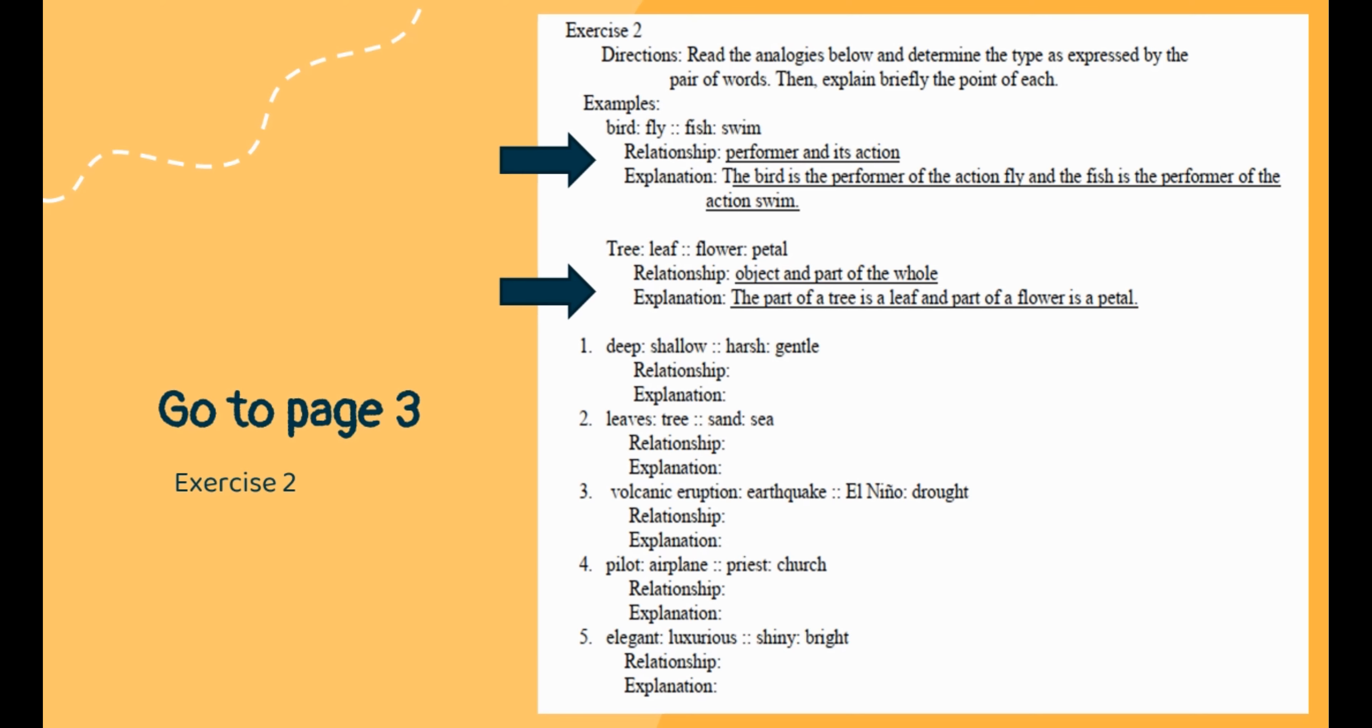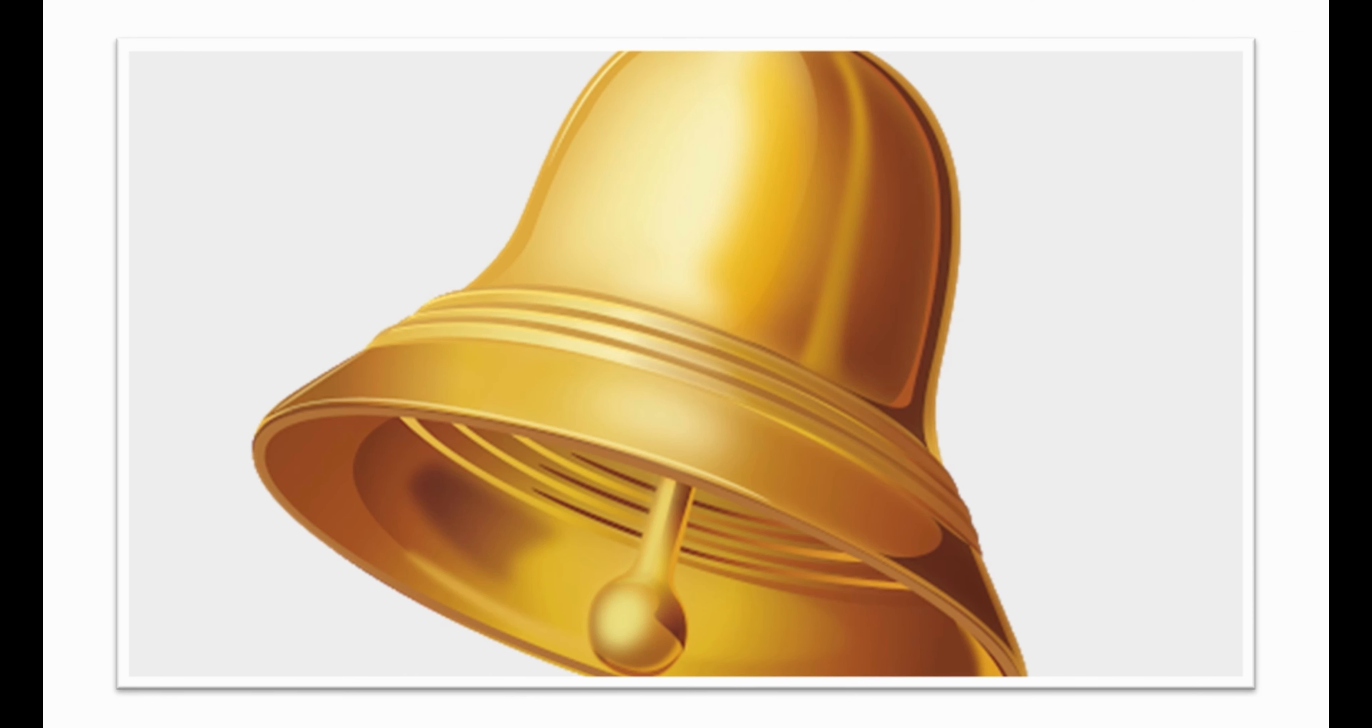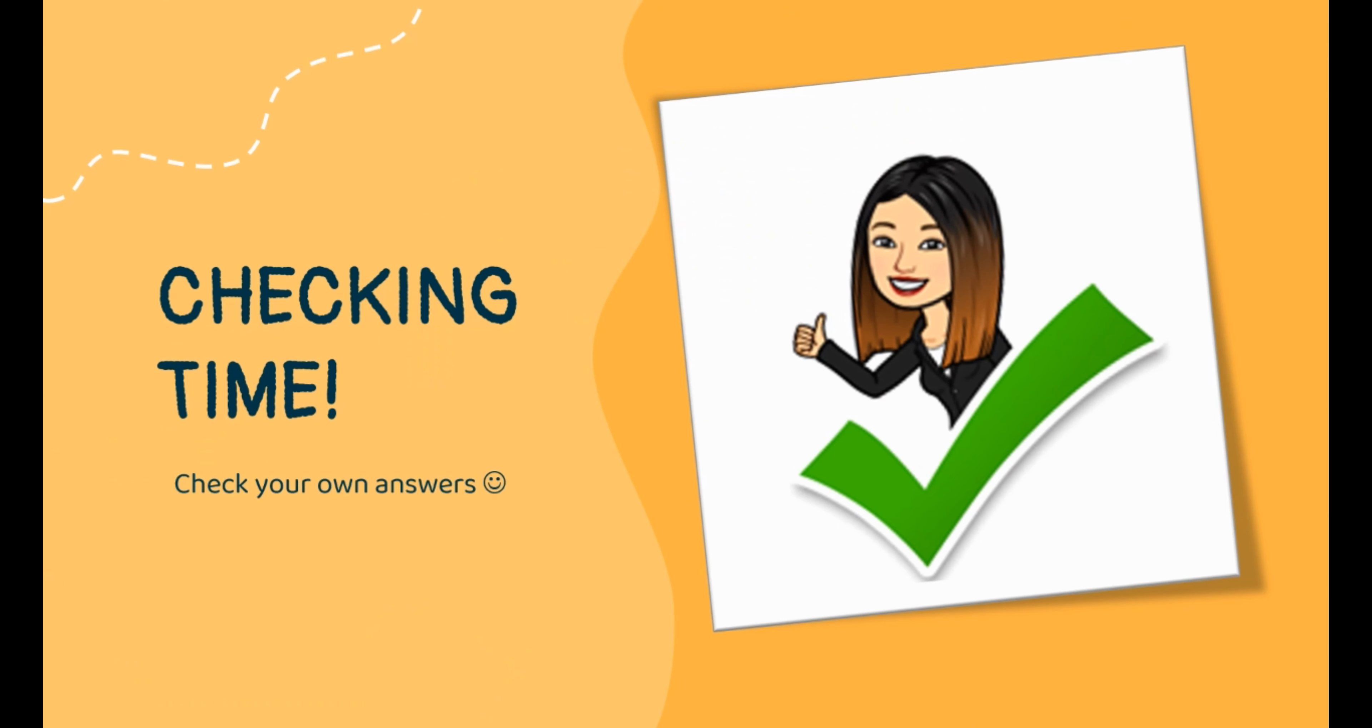Another example is tree is to leaf as flower is to petal. Their relationship is object and part of the whole. The part of the tree is a leaf and part of the flower is a petal. Are you ready to answer the rest? Let's go! It's checking time. Let's see if you are able to answer correctly. Check your own answers.